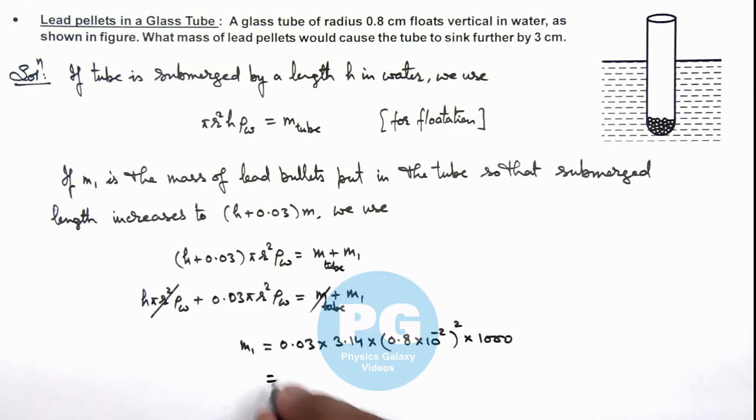So on simplifying this relation, we'll be getting 6.03 × 10⁻³ kilogram.